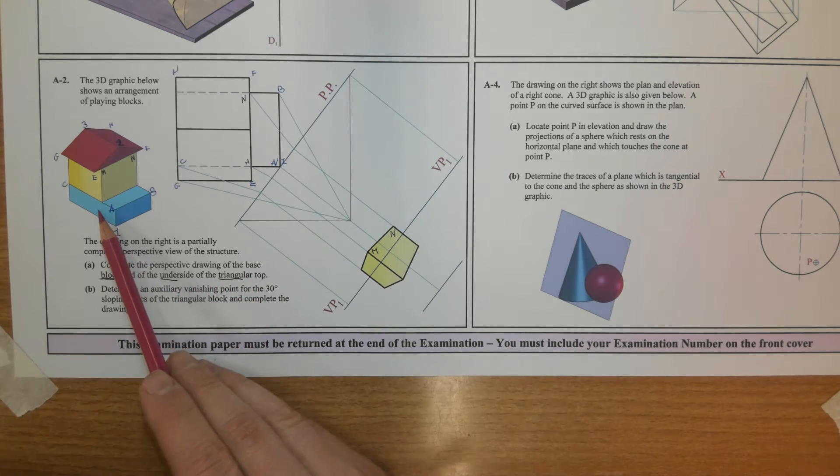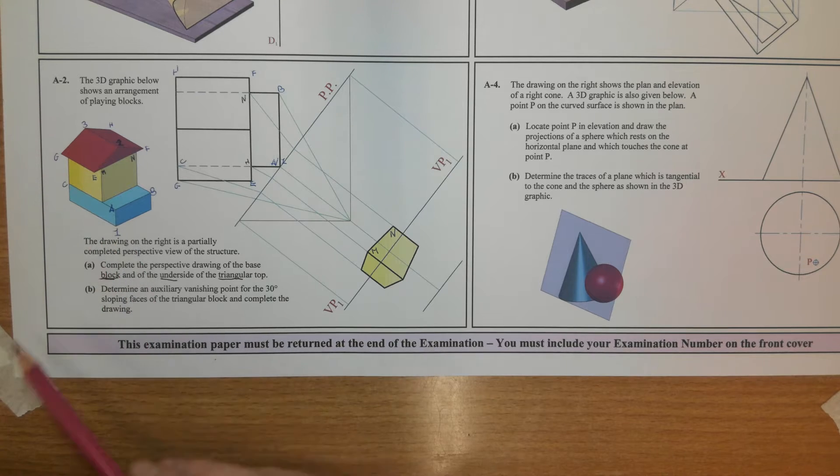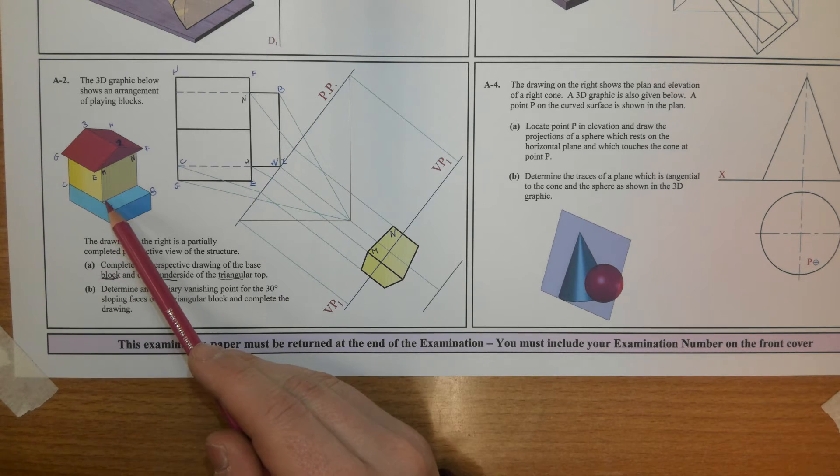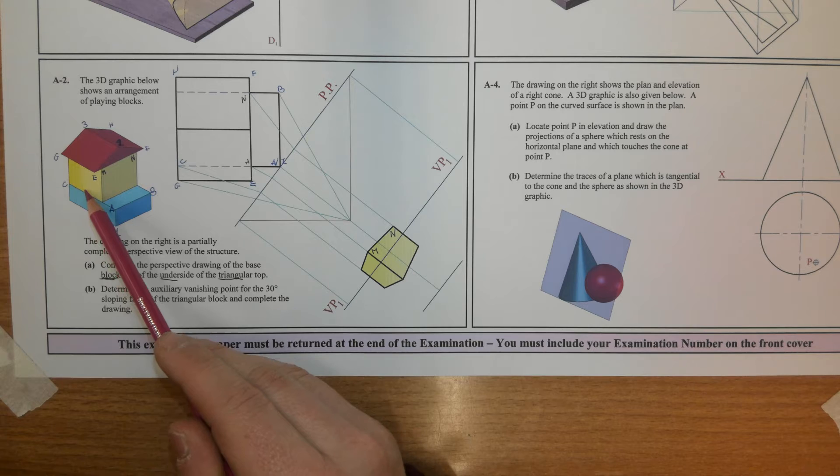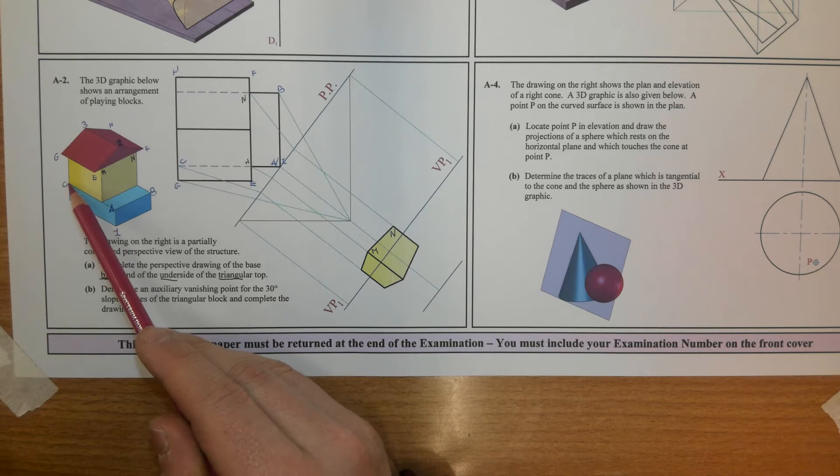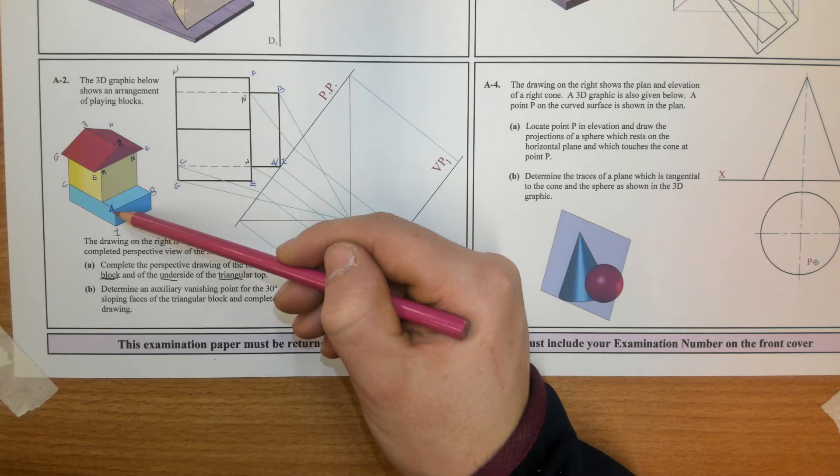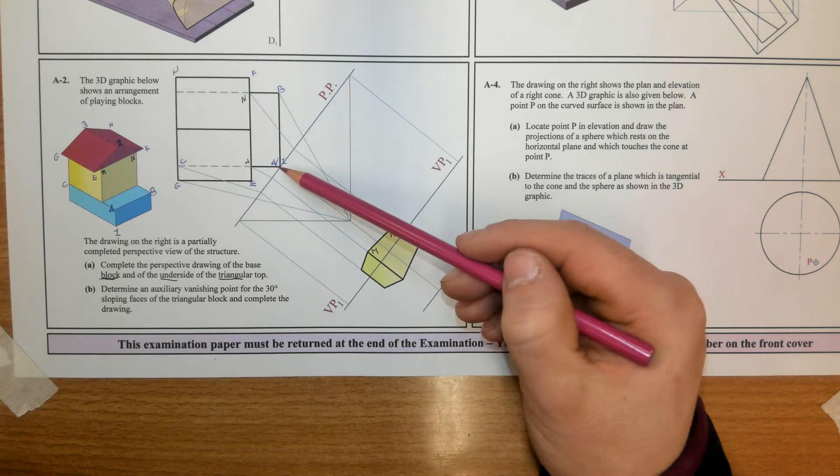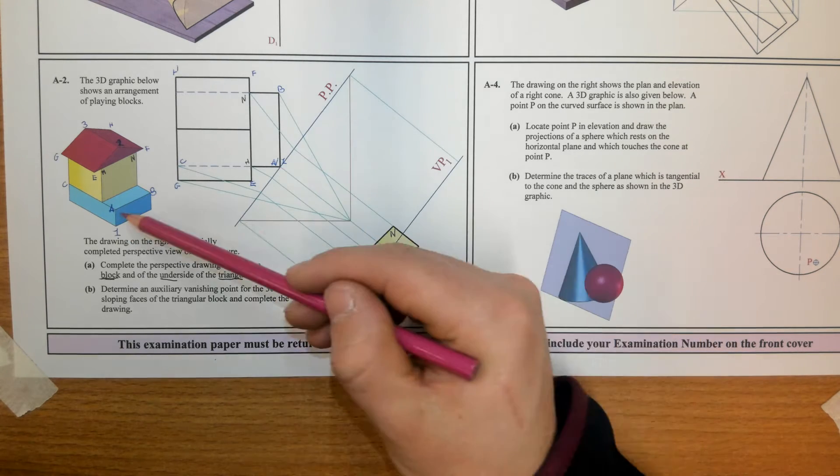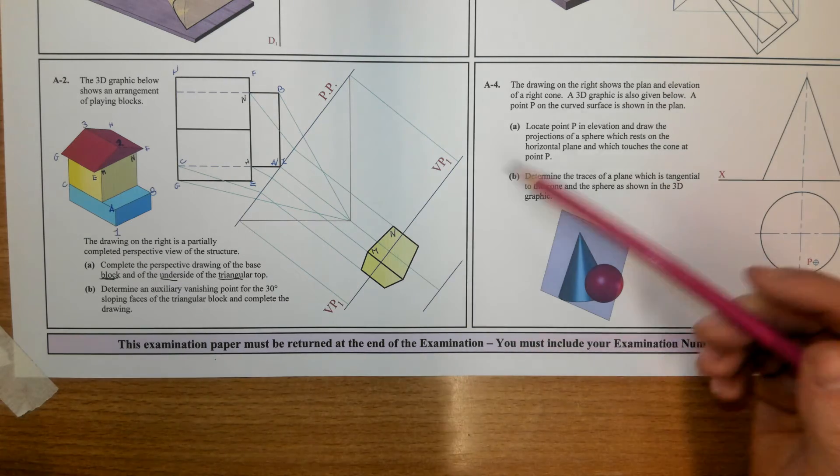Part A complete the perspective drawing of the block and of the underside of the triangular top. Alright so basically they're looking for the blue block here. Now you've got to understand that the yellow block shares an edge with the blue block and that any line on the picture plane in perspective or any line on the picture plane in plan is a true height in perspective.